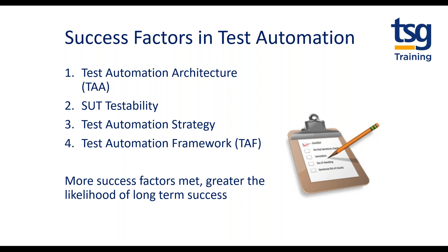The SUT needs to be designed for testability. In the case of API testing, this could mean more classes, modules, or the command line interface needing to be exposed as public so they can be tested. There needs to be a test automation strategy that considers the costs, benefits, and risks of applying automation to different parts of the SUT — for example, old versus new code, new applications versus legacy systems, and complex parts versus straightforward areas. The test automation framework provides an environment for test automation, usually a test harness and test libraries — it needs to be easy to use, well-documented, and obtainable to support a consistent approach to automating tests.